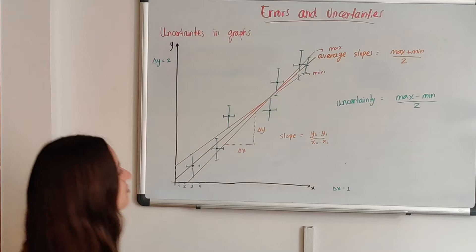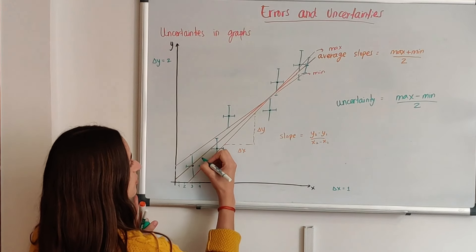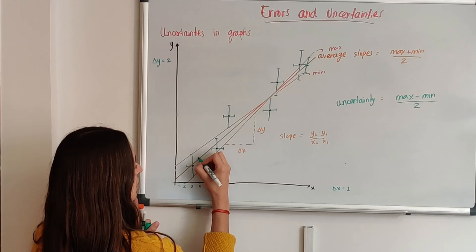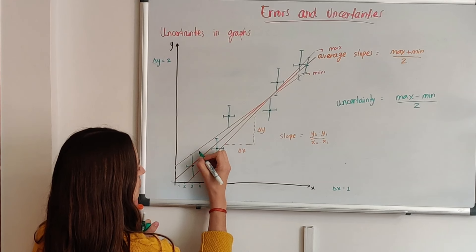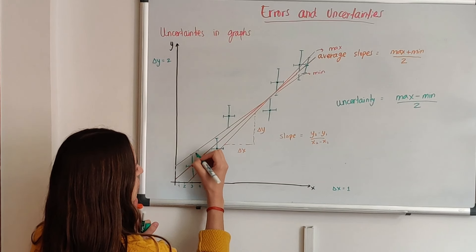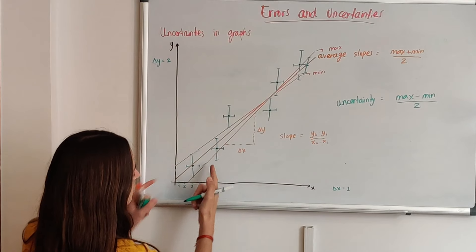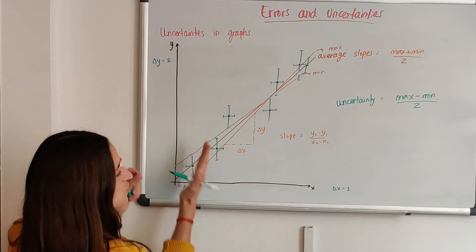So what we're basically saying with this equation is that your slope could be this one, but it could go from this high one to this low one. It could be any slope between those two.